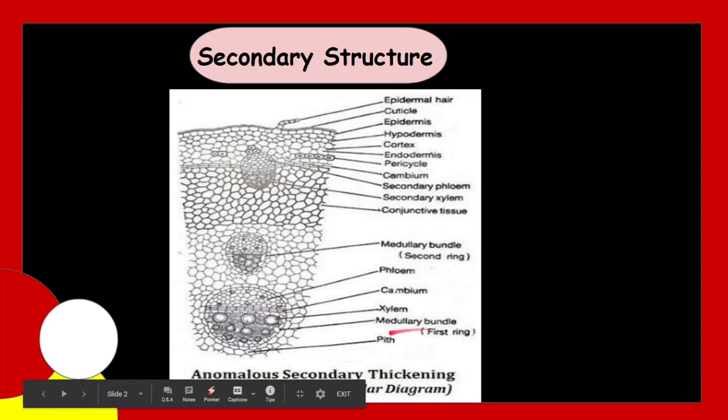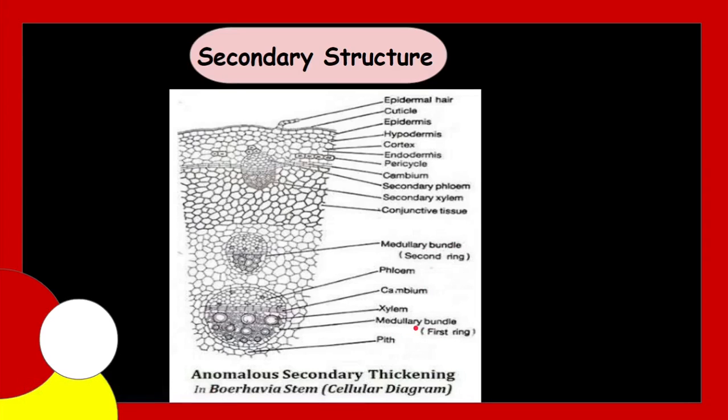So, this first cambium ring towards the outer side of secondary tissue, these strips develop in the interfascicular areas. These strips join with the new extrafascicular cambium strips formed from pericycle lying external to secondary phloem. Both kind of cambium strips join to form a second ring of cambium. And the activity of this cambium is same as that of first ring.